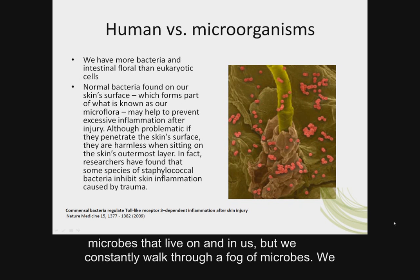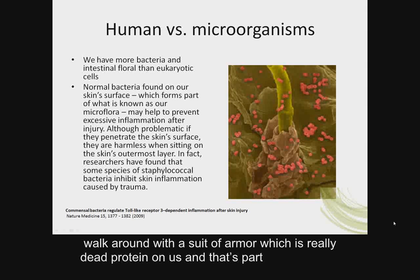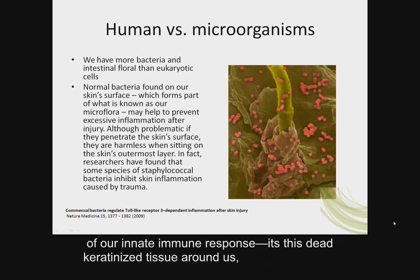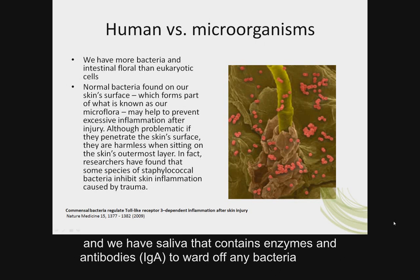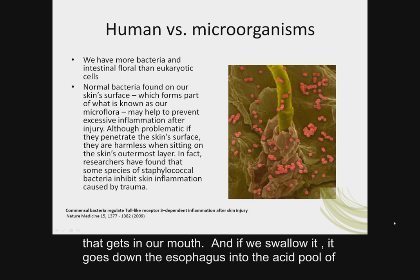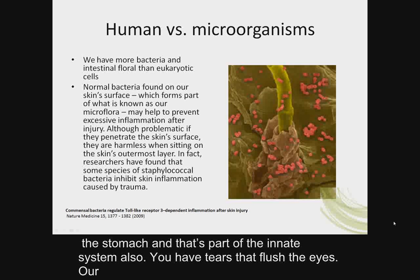Not only do we have microbes that live on us and in us, but we constantly walk through a fog of microbes. We walk around with a suit of armor, which is really dead protein on us, and that's part of our innate immune response — keratinized tissue around us. We have saliva that contains enzymes and antibodies like IgA to ward off bacteria that gets in our mouth. If we swallow it, it goes down the esophagus into the acid pool of the stomach, which is also part of the innate system.